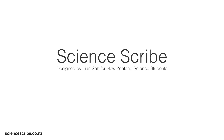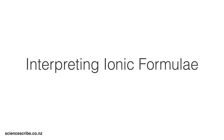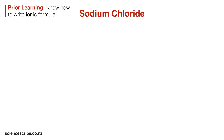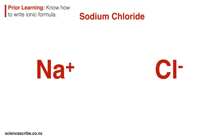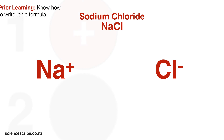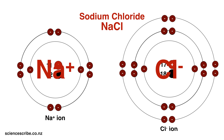This is Lien So from Sciencecribe and in this video we're going to look at how to interpret ionic formulas. Before you go any further, you should know how to write an ionic formula. For example, given sodium chloride, you should look in the table of ions for Na+ and Cl-, and from that write NaCl as your ionic formula. You should also be comfortable with drawing the structures of ions, and I've gone ahead and shown those there for you.